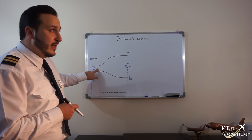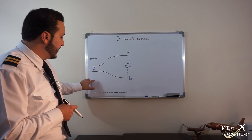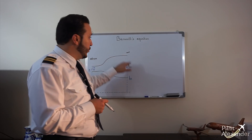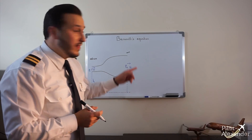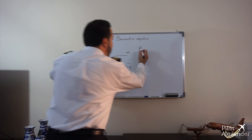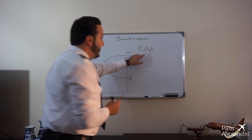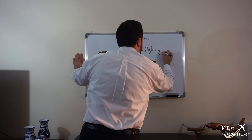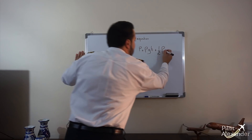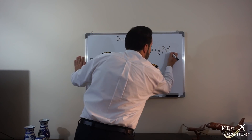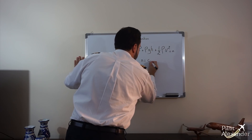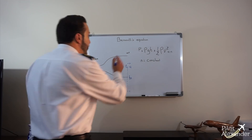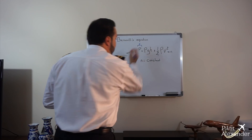What Bernoulli's equation tells us is that the pressure at any point inside the tube, plus rho times g times h — which is the density of the fluid times the acceleration due to gravity times the height — plus one-half of rho times velocity squared, is equal to a constant N. Bernoulli is telling us that the result of this equation is always constant throughout the flow.